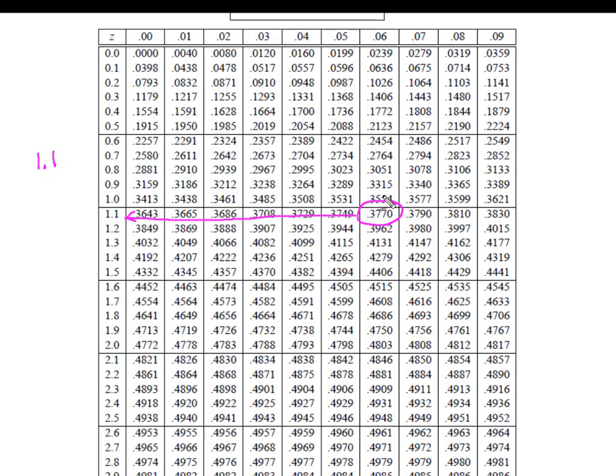I'm going to come back out to this side and know I have 1.1. I'm going to come up and I have my 0.06. So I know that 37.70% of the data is going to be located between the mean and a z of 1.16.